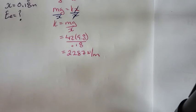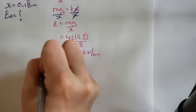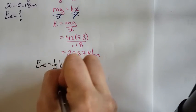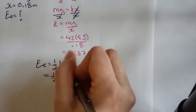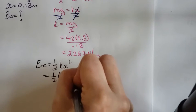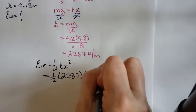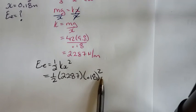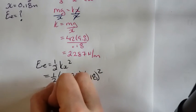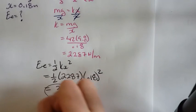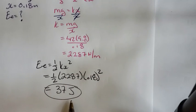So I know the elastic energy is equal to one half KX squared. So it'll be one half K, we just calculated that, it's 2,287. X is 0.18 squared. The biggest mistake students make, they forget to square it. When you put all that into your calculator, you get 37 Joules. So elastic energy is measured in Joules.